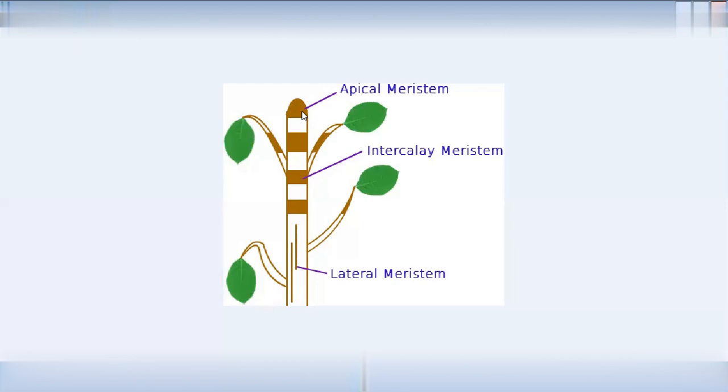Now consider our human body. We have height and bone growth. In bone growth, we have epiphysial plates where cells divide. Because of epiphysial plates, we have height growth — we grow tall.